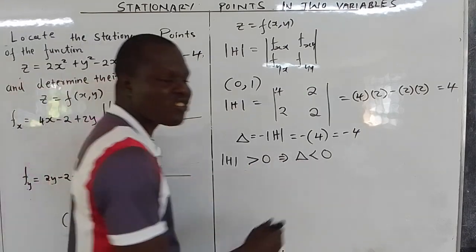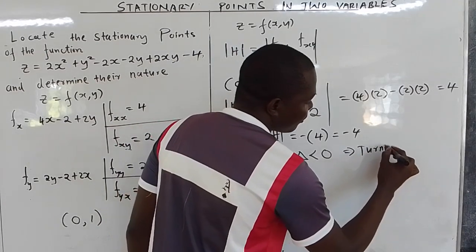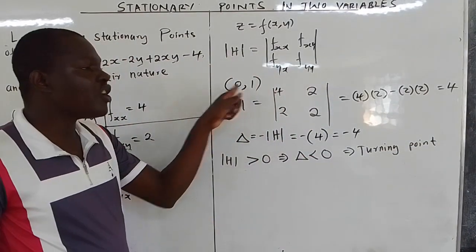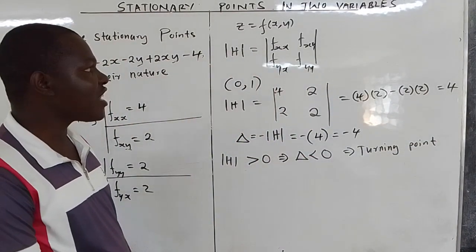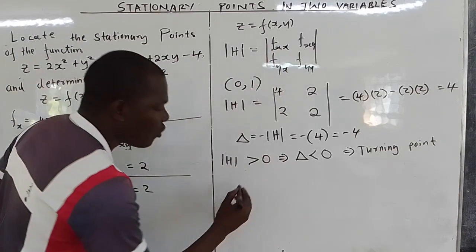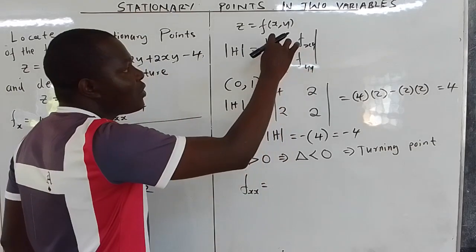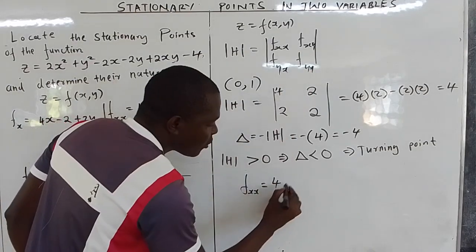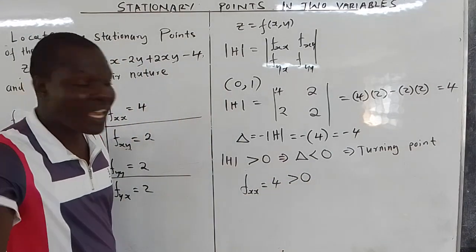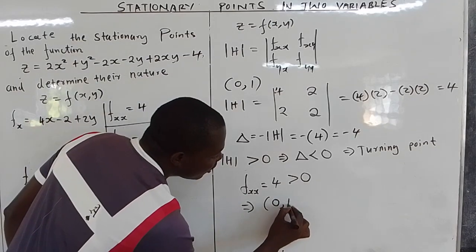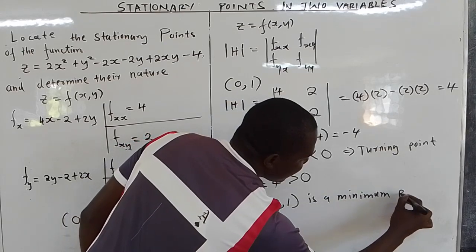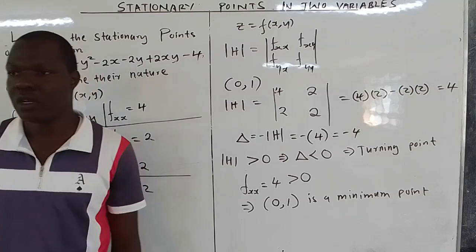When the discriminant is less than 0, that indicates a turning point. To determine the nature of the turning point, we check f_xx. Since f_xx equals 4 and 4 is greater than 0, the point is a minimum. Therefore our stationary point (0, 1) is a minimum point.